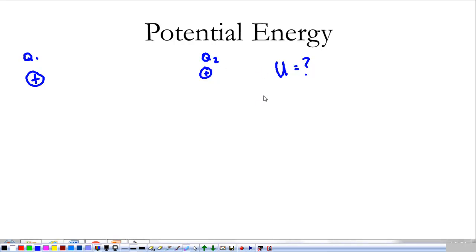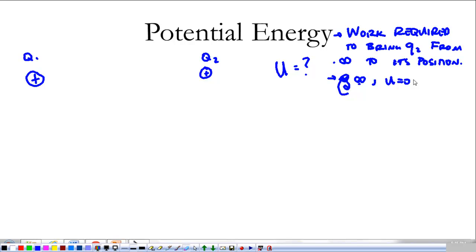So, my potential energy, and the way that we're going to define this, is the work required to bring charge two, or the second charge, or whatever it is, from an infinite distance away to its position. That's how we're going to define potential energy. The work required to go from infinity to here. And the reason we're doing that is because at infinity, potential energy is zero. The force is zero. It doesn't take any work to move anything around at infinity. That's why we use that as a point.